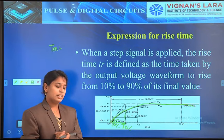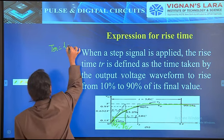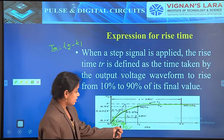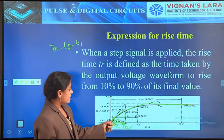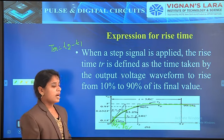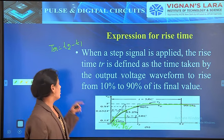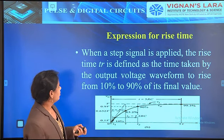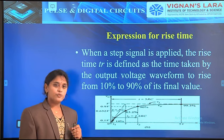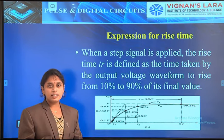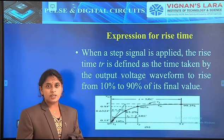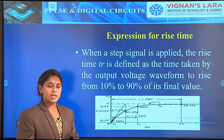Rise time is the time taken by a waveform to reach 10 percent to 90 percent. The maximum value occurs at 90 percent, that is T2 minus T1. At T1 position, it is at 10 percent level, and at T2 it is at 90 percent. We have to solve the equation to find TR using this waveform. The output waveform is in terms of an exponentially increasing signal, that is V0 equal to V into 1 minus e power minus T by RC.